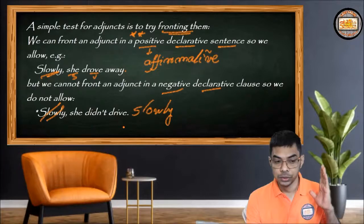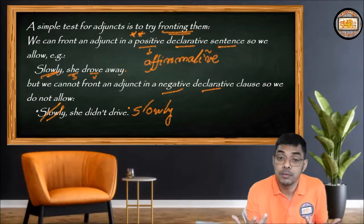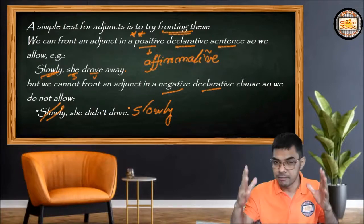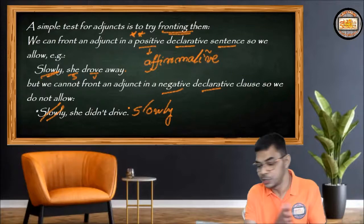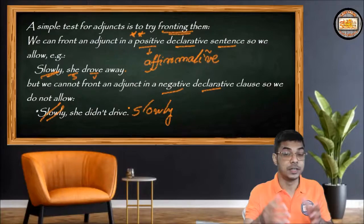To remember: adjuncts in frontal positions are only accepted in affirmative declarative sentences — not negative ones. That's all from our discussion of adjuncts. We have many more things to learn about adjuncts, disjuncts, and conjuncts, and we'll cover them gradually. Stay tuned with us, and don't forget to hit the subscribe button with the bell icon if you've reached this channel for the first time. We'll return very soon — till then, bye bye, happy learning!